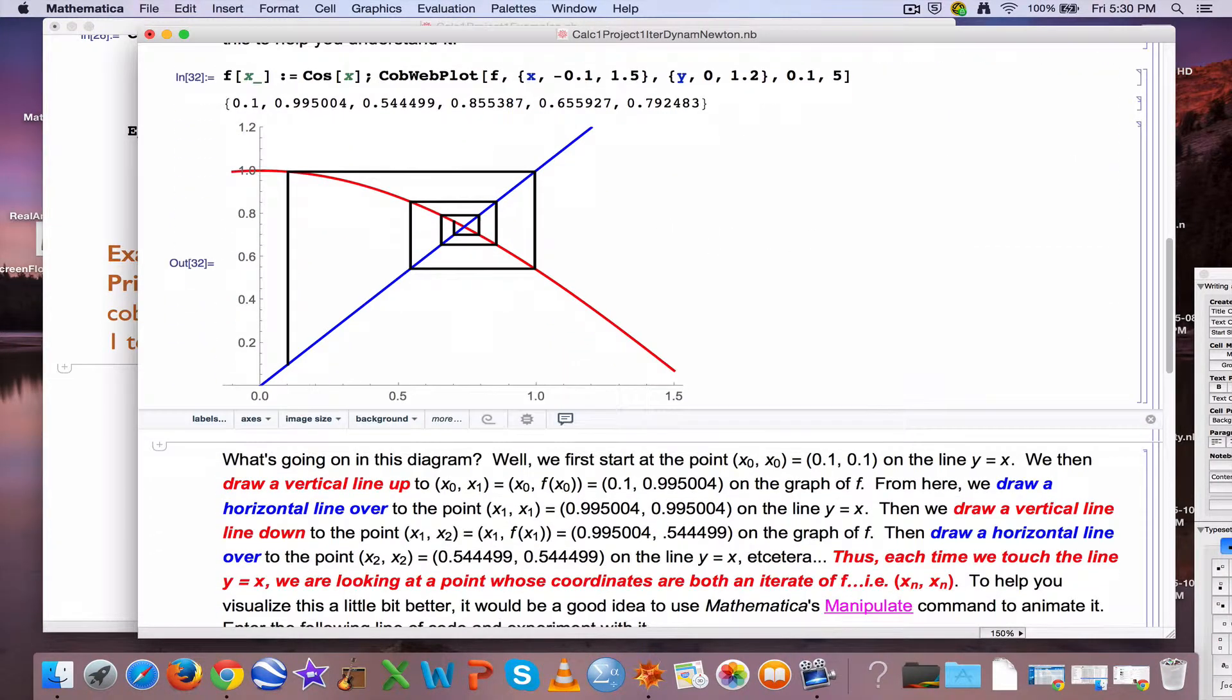You enter this code, and here we're going to use it for the function f of x equals cosine of x. The syntax is again to put the function name there, the range of values for x and y that you want to plot there, the seed that I picked to be 0.1 here, and the number of iterations there. Let's start with a smaller number, let's start with 5. What do we see in this picture? We see this thing called the cobweb plot that's supposed to help us understand the iterates. You can read through this to help you understand it, I will briefly explain it.